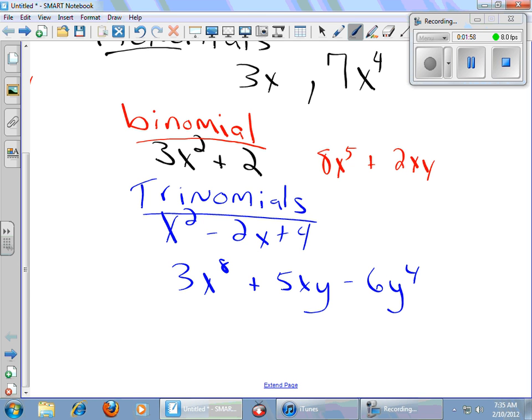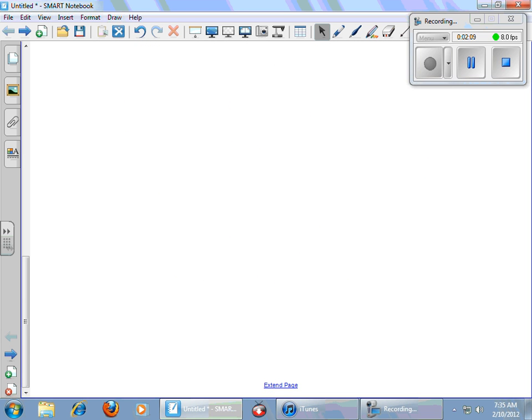Well, three or more, many. Okay, we have monomials, one term. Binomials, two terms. Trinomials, three terms. And then after three terms, we go to polynomials. All right.